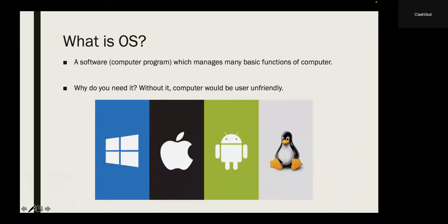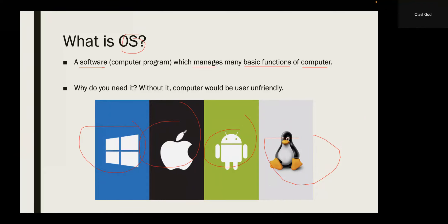First, let's talk about what is an operating system. The operating system is a software, which is a computer program, which manages many basic functions of a computer. It's kind of like a computer program that runs your computer. Some examples of operating systems are Windows, Mac OS, Android, and Linux. You use them and they give you lots of functions which run the computer.